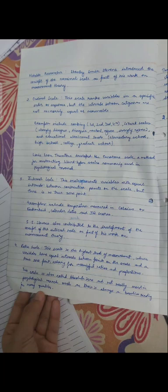Last is ratio scale. Now this scale is the highest level of measurement where variables have equal interval between points of the scale and also there is a true zero point allowing for meaningful ratios and proportions. The scale is the highest level of measurement.